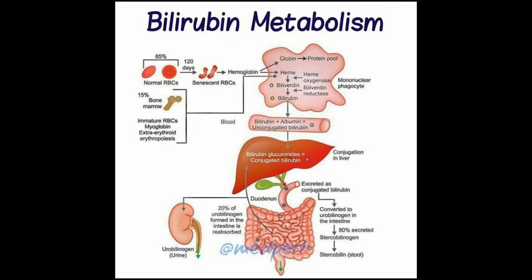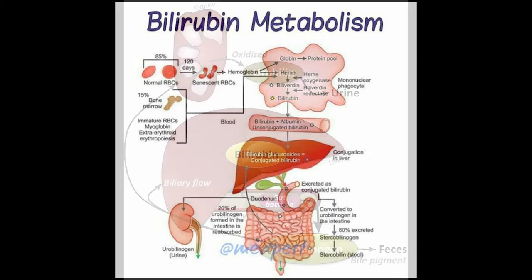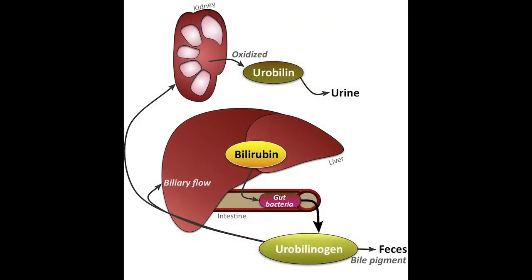When you digest food, the gallbladder excretes bile into the small intestine. The bile is converted by microbes into a substance called urobilinogen, which is then instantly oxidized into urobilin. Urobilin is the substance which gives feces its brown color.